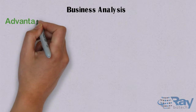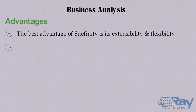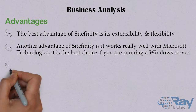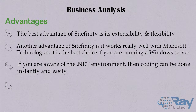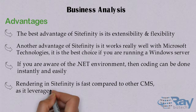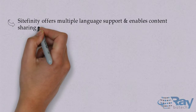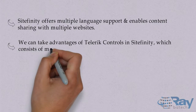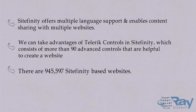Business Analysis — Advantages. The best advantage of Sightfinity is its extensibility and flexibility. Another advantage is it works really well with Microsoft technologies and is the best choice if you are running a Windows Server. If you are aware of the .NET environment, coding can be done instantly and easily. Rendering in Sightfinity is fast compared to other CMS as it leverages caching. Sightfinity offers multiple language support and enables content sharing with multiple websites. We can take advantage of Telerik controls in Sightfinity, which consists of more than 90 advanced controls helpful to create a website. There are 945,597 Sightfinity-based websites.